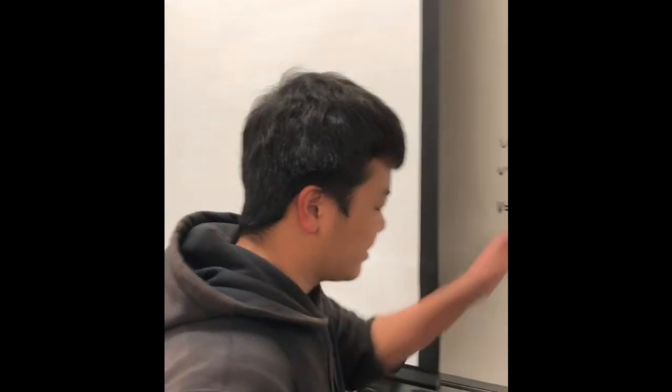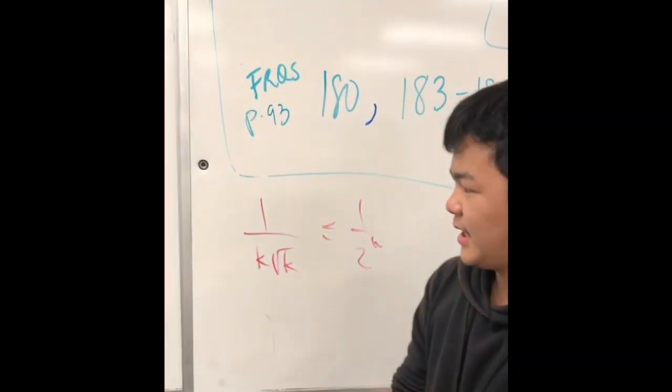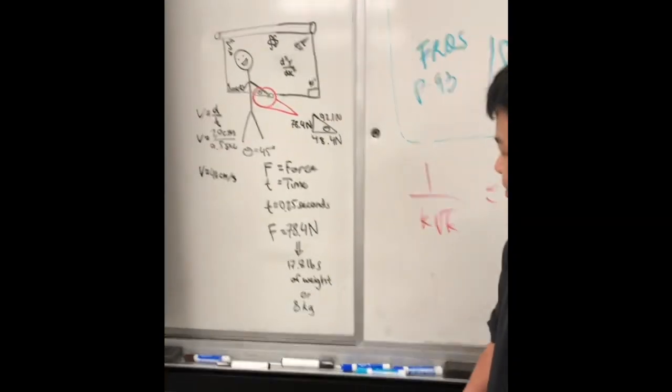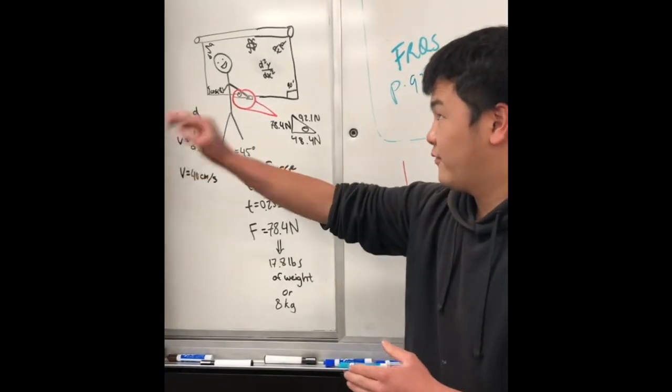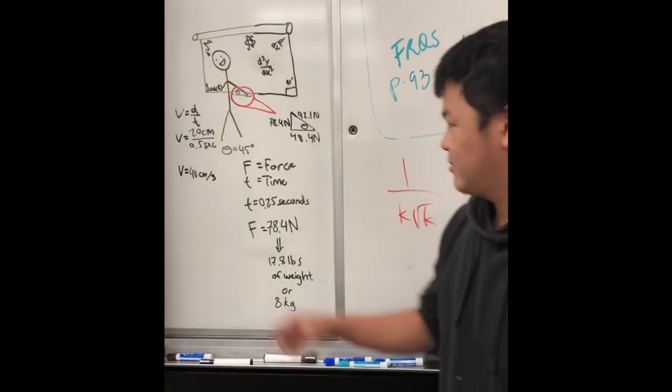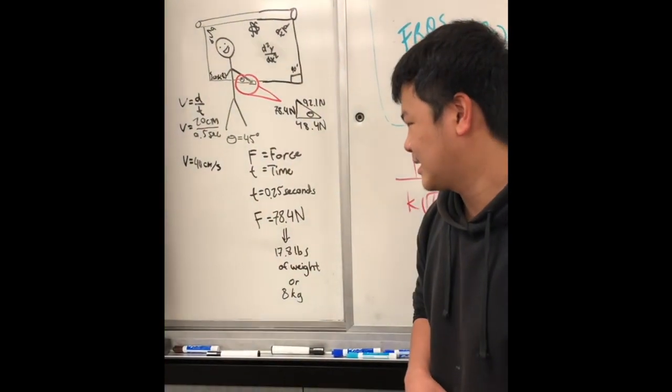Now, by combining the distance and time, we can find velocity. The distance that the hand travels, we found out, was to be 20 centimeters, and that movement for successful pull optimization would only take you 0.5 seconds. That gives us a velocity of 40 centimeters a second.